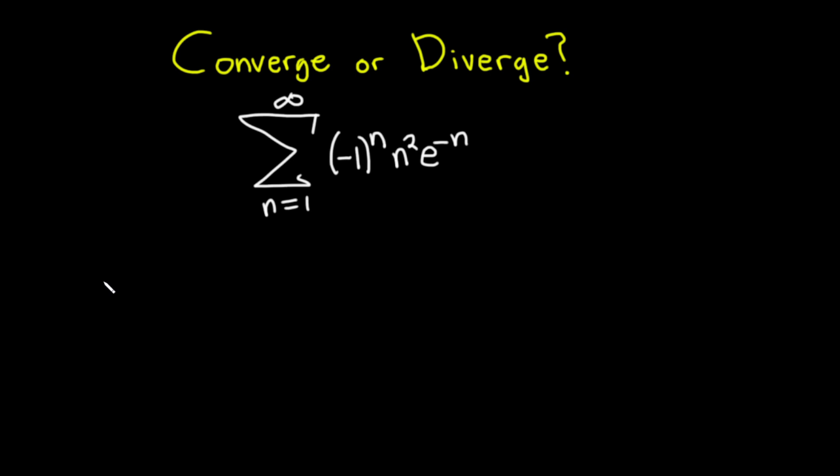The ratio test says if we take the limit as n approaches infinity of the absolute value of a_{n+1} over a_n, if we get an answer less than 1 then we have convergence, if it's equal to 1 no information, and if it's greater than 1 divergence.